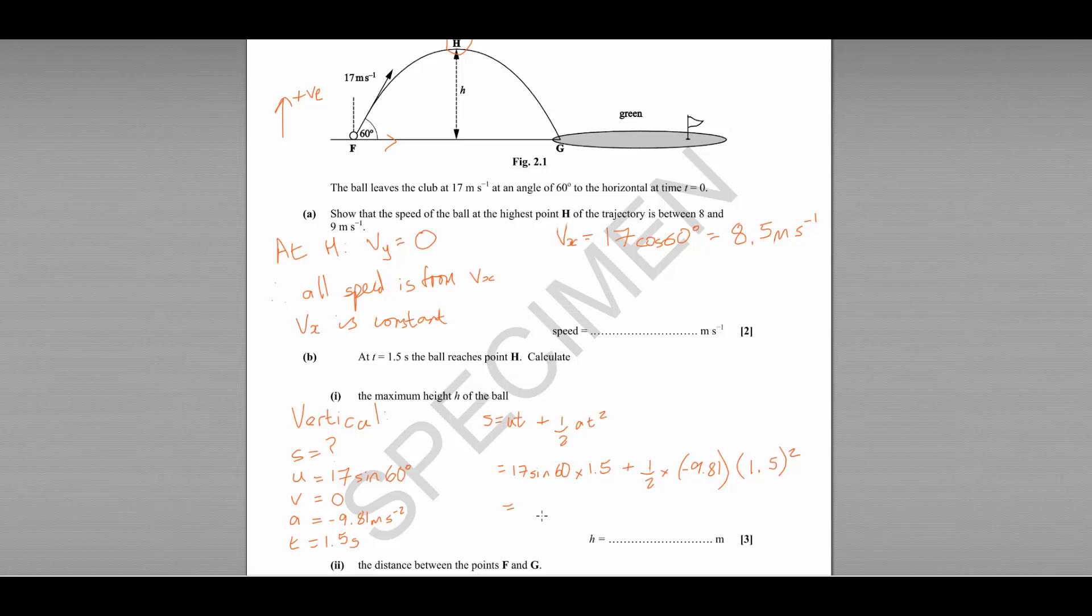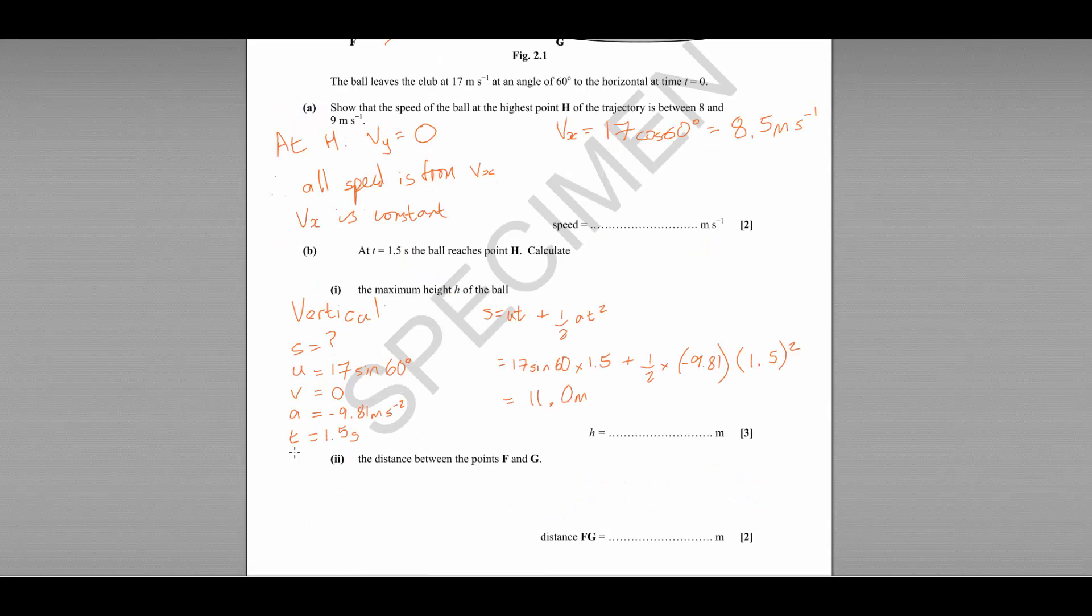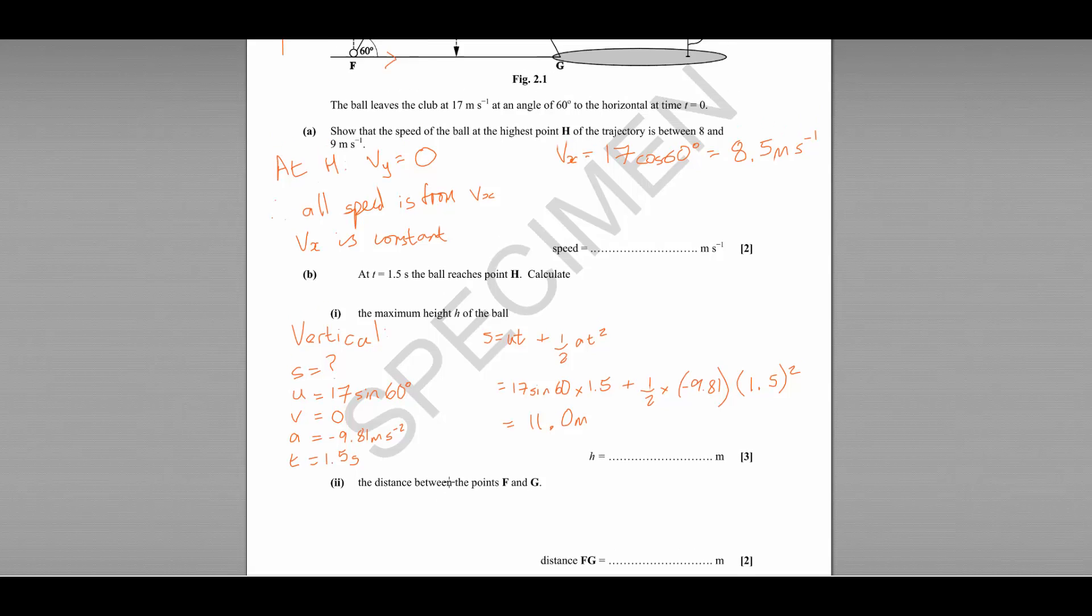And we multiply that by 1.5 squared, which is T. And our displacement S, which is also H, will come out at 11.0 metres.